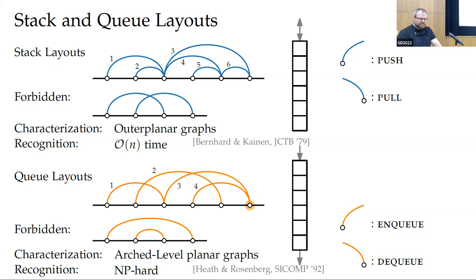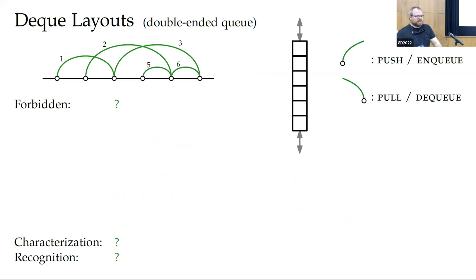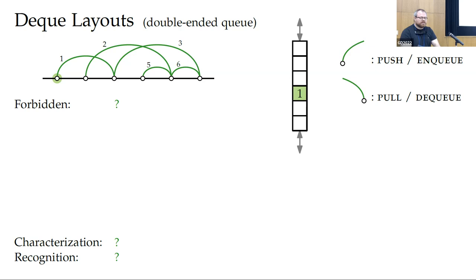These are not the only data structures we can define layouts for. For example, we can look at double-ended queues, where we can add or remove at either the top or the bottom. This gives dequeue layouts. A layout with both a crossing and a nesting is not a stack or queue layout, but it can be a dequeue layout. Verifying: we put everything on the deque — start with one, put two at the bottom, remove one, put three and five at the top. Now we remove two and five, one from the top and one from the bottom — so this works.